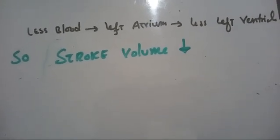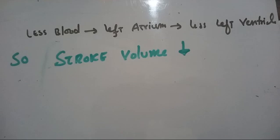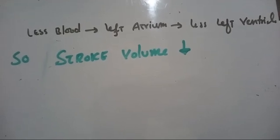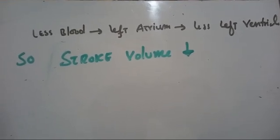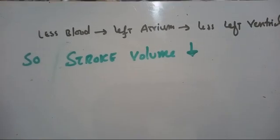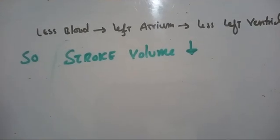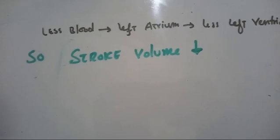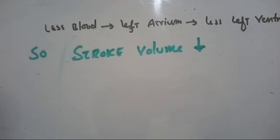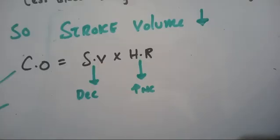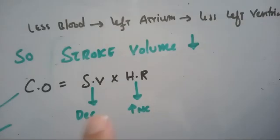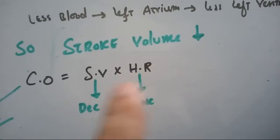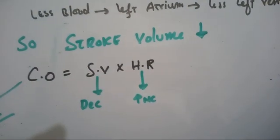During inspiration, blood flow to the right atrium is increased due to increased venous return, but blood flow to the left atrium is decreased because the lung expands, the vessels inside dilate, and blood pools. There is less blood coming to the left atrium, and since the left atrium gives blood to the left ventricle, there is less blood coming to the left ventricle, so stroke volume — the volume of blood ejected with each beat — decreases.